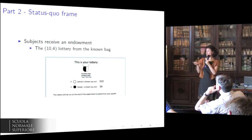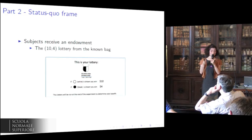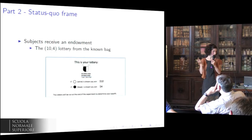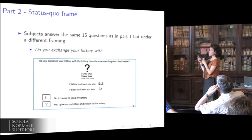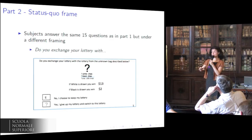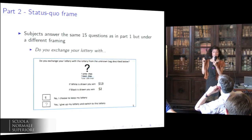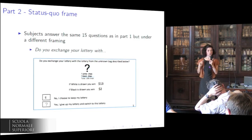In part two — the status quo frame — subjects first receive an endowment: the 10-4 lottery from the known bag, which is a physical piece of paper in their hand describing the lottery, the payoff, and the bag in which it will be performed. They then answer the same 15 questions as in part one, but now framed as a switch from the lottery in their hand to an ambiguous bet described on the question. They report their answer as yes or no: do you want to switch your lottery or not?